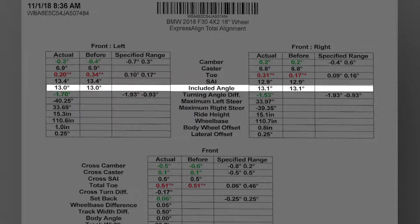The included angle, which is next, is measuring everything between the pivot points, which would be your strut, knuckle, and hub bearing. What you're looking for here is large side-to-side differences of one and a half degrees or more. Basically what we're doing is cutting the parts into two groups, and then doing side-to-side comparative measurements to establish what parts are in fact damaged.